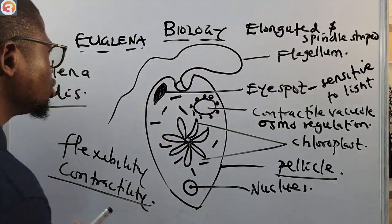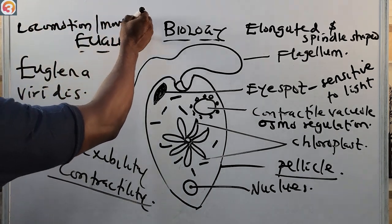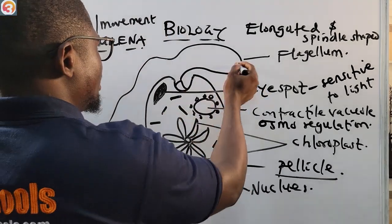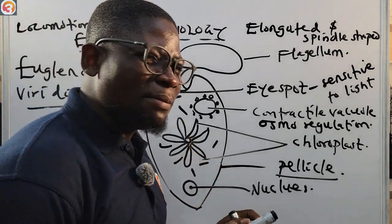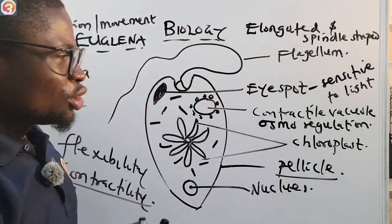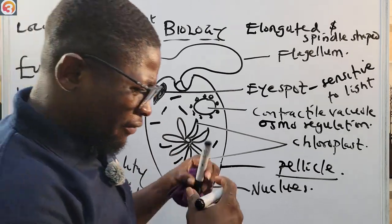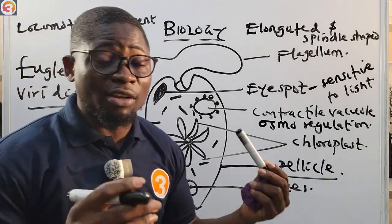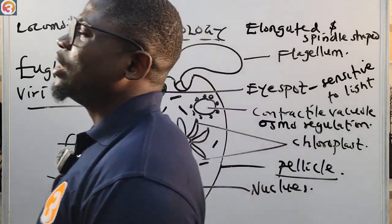The Euglena also has a flagellum, which is used for locomotion or movement. Likewise, the Euglena has both animal-like and plant-like characteristics — some features make it behave like an animal, and some make it behave like a plant. In fact, this is a past exam question: which of the following organisms has both plant-like and animal-like characteristics? The answer is Euglena viridis.